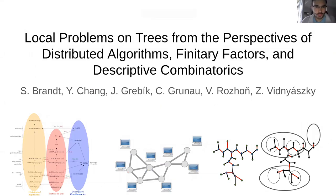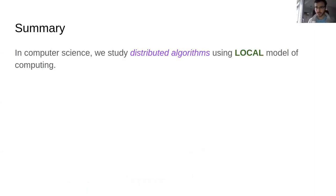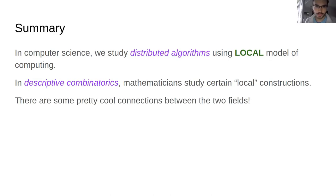Hello everybody. This is a talk about local problems on trees from two perspectives. One is the perspective of distributed algorithms and the other will be the perspective of descriptive combinatorics. Let me start by giving you a short summary of what this talk is about.